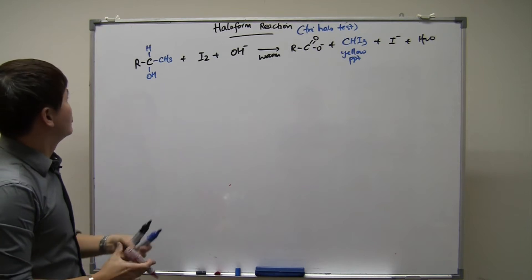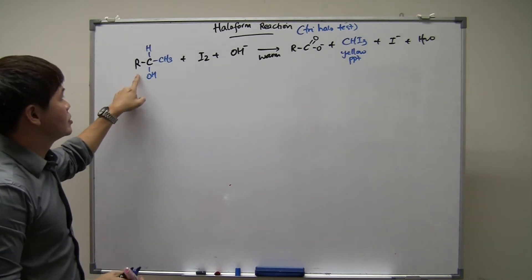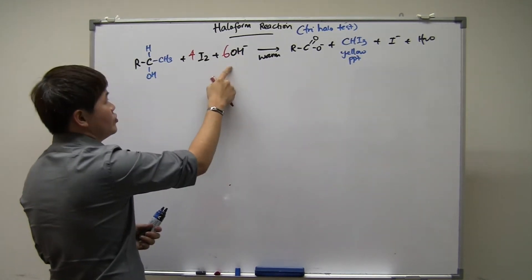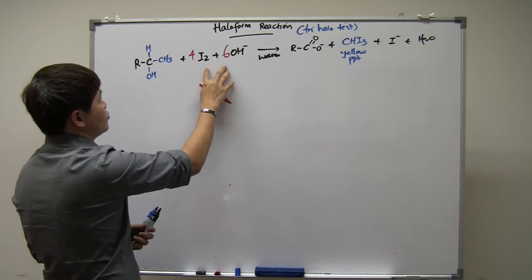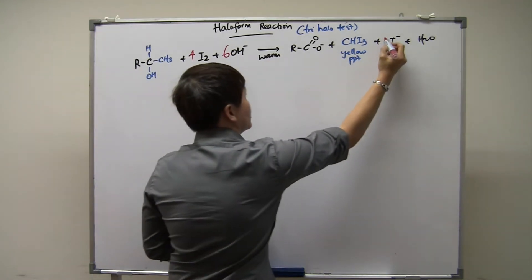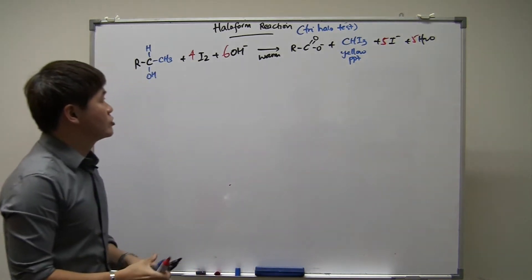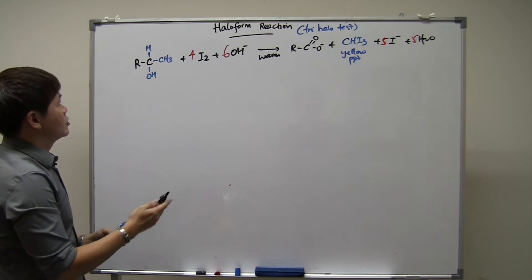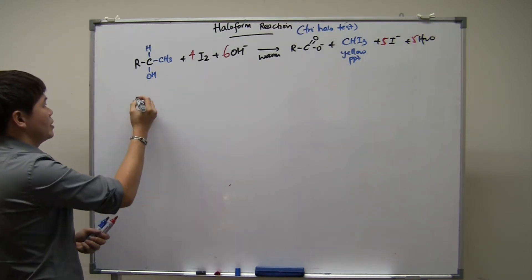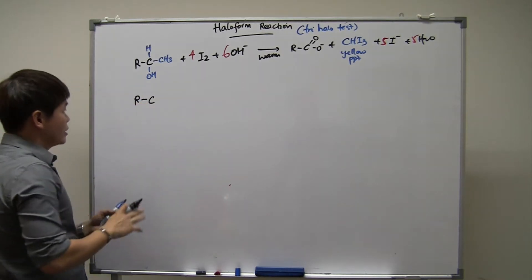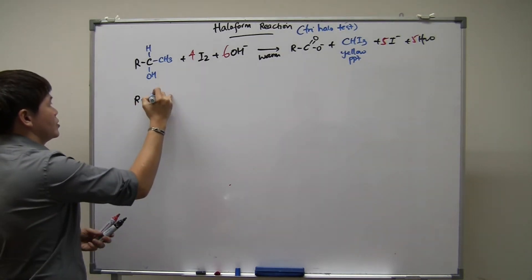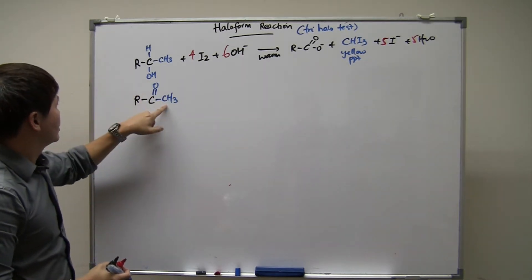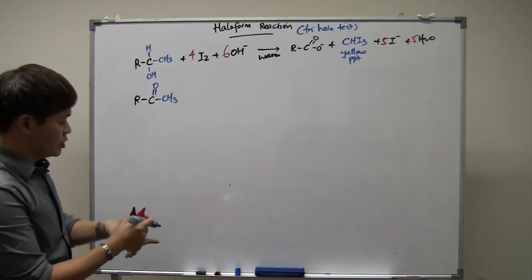Some schools teach that for this reaction, no matter what the R group is, the ratio between the stoichiometric coefficients of iodine and hydroxide is 4:6, then you put a 5 in front of each organic species to balance it. We also learn that in the next chapter — after the alcohols chapter, people normally teach the carbonyls chapter — and certain forms of carbonyls also undergo the iodoform test, but you need a structure where there's a carbonyl C=O and another CH₃ group.